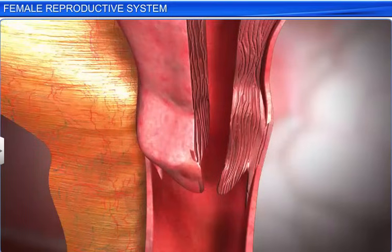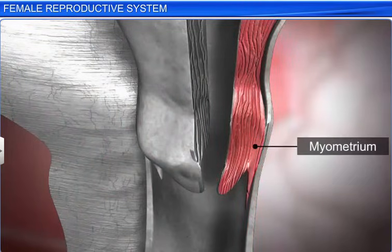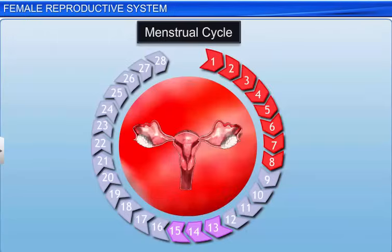The outer thin membranous layer is called the perimetrium. The middle thick layer of smooth muscle is called the myometrium, and it helps during delivery by producing strong contraction motions. The inner glandular layer is called the endometrium, and it undergoes cyclical changes during the menstrual cycle.